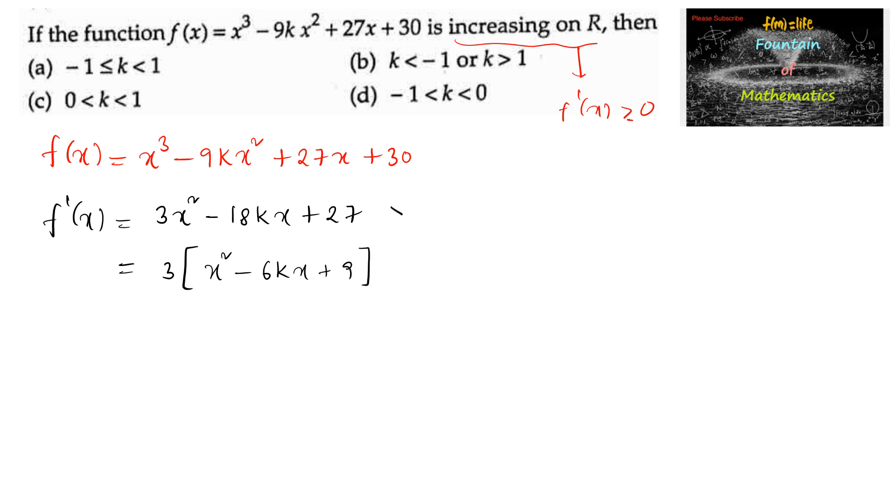Since it is increasing, we use f'(x) ≥ 0, so x² - 6kx + 9 ≥ 0. This can be simplified further: x² - 2x(3k) + (3k)² - (3k)² + 9 ≥ 0.